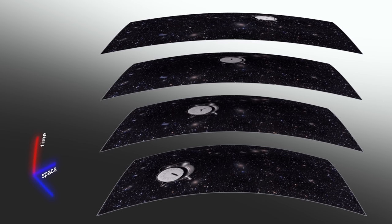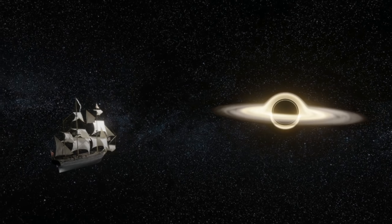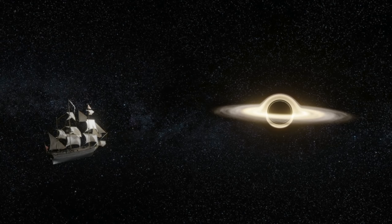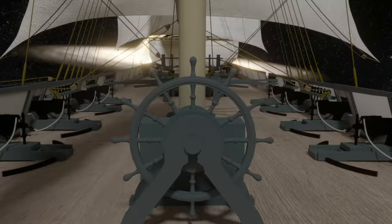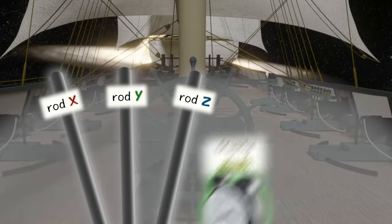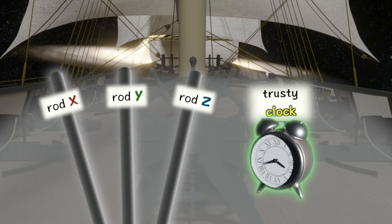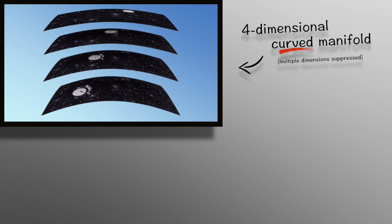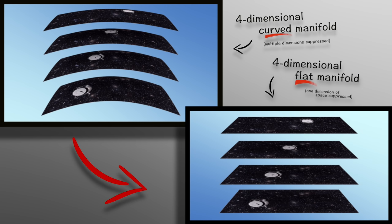They needed a way to depict a four-dimensional curved surface using only the resources allotted to a casual observer, i.e. the four independent measurements of space and time. Meaning they had to take a four-dimensional curved surface and map it onto a four-dimensional flat surface.